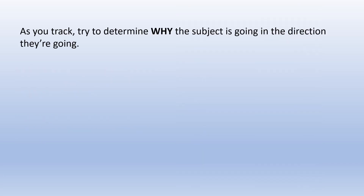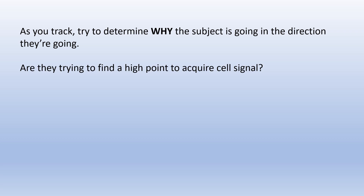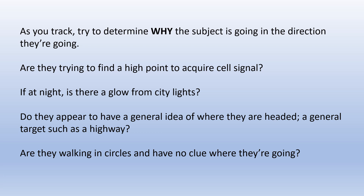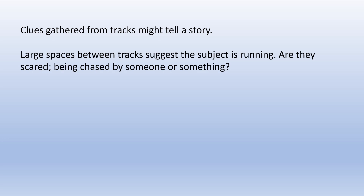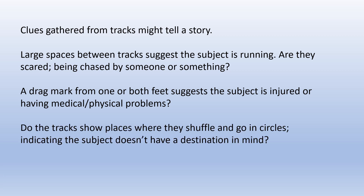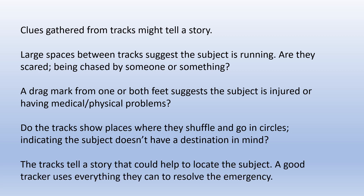As you track, try to determine why the subject is going in the direction they're going. Are they trying to find a high point to acquire cell signal? If at night, is there a glow from city lights? Do they appear to have a general target such as a highway, or are they walking in circles with no clue where they're headed? Large spaces between tracks suggest the subject is running — are they scared or being chased? A drag mark from one or both feet suggests injury or medical problems. The tracks tell a story that could help locate the subject, and a good tracker uses everything they can to resolve the emergency.